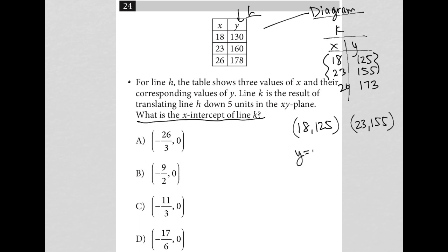So I have 18 comma 125 as an ordered pair and 23 comma 155 as an ordered pair. I'm going to write my slope intercept form of a line here, Y equals MX plus B. I'm going to find M by taking the difference in my Y values, 155 minus 125, over the difference in X values, 23 minus 18.